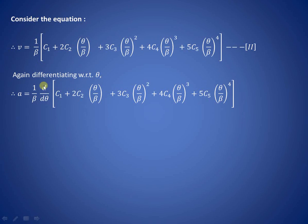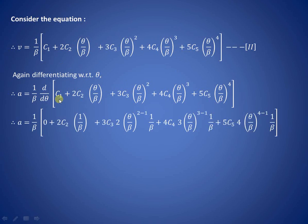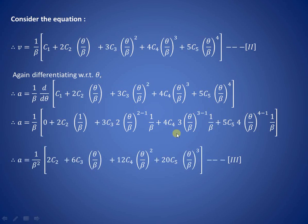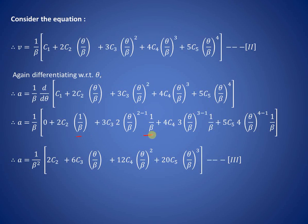Differentiating the velocity expression again with respect to theta gives acceleration. Taking 1/β² as the common factor, we get: d²s/dθ² = (1/β²)·[2c2 + 6c3·(θ/β) + 12c4·(θ/β)² + 20c5·(θ/β)³]. This is the expression for acceleration in the case of rise motion. We now have equations 1, 2, and 3 for displacement, velocity, and acceleration.